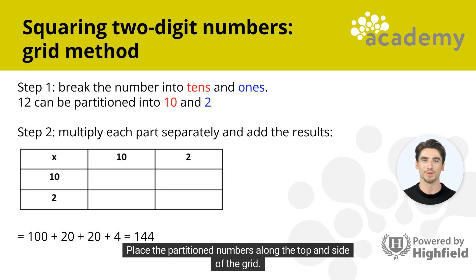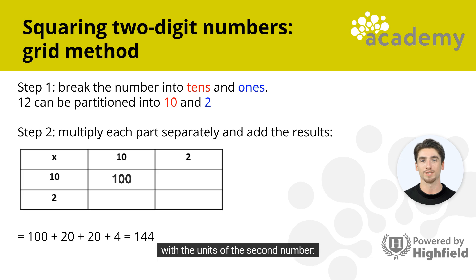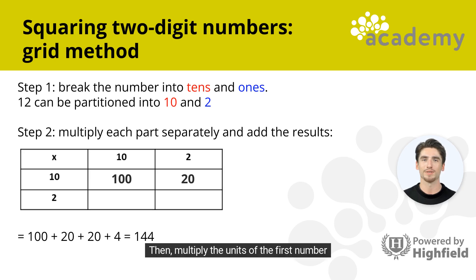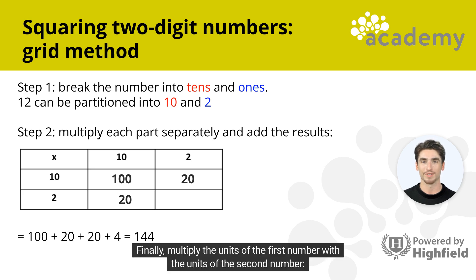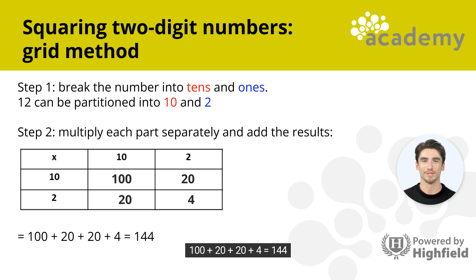Place the partitioned numbers along the top and side of the grid. Step 2: multiply each part separately, then add the results. Multiply the tens by the tens: 10 × 10 = 100. Multiply the tens by the units: 10 × 2 = 20. Multiply the units by the tens: 2 × 10 = 20. Multiply the units by the units: 2 × 2 = 4. Then add the four answers: 100 + 20 + 20 + 4 = 144. So 12 squared is 144.